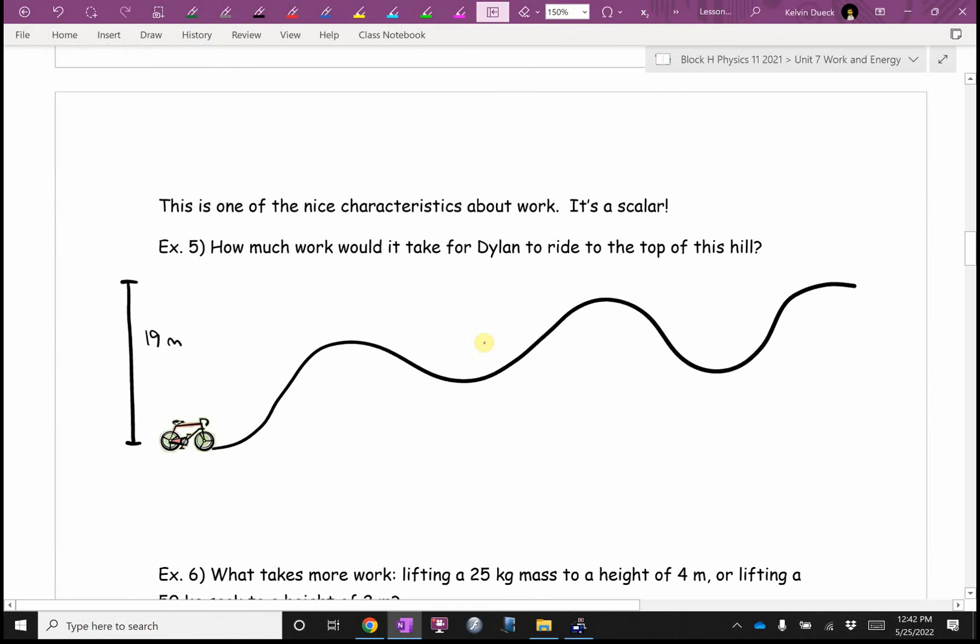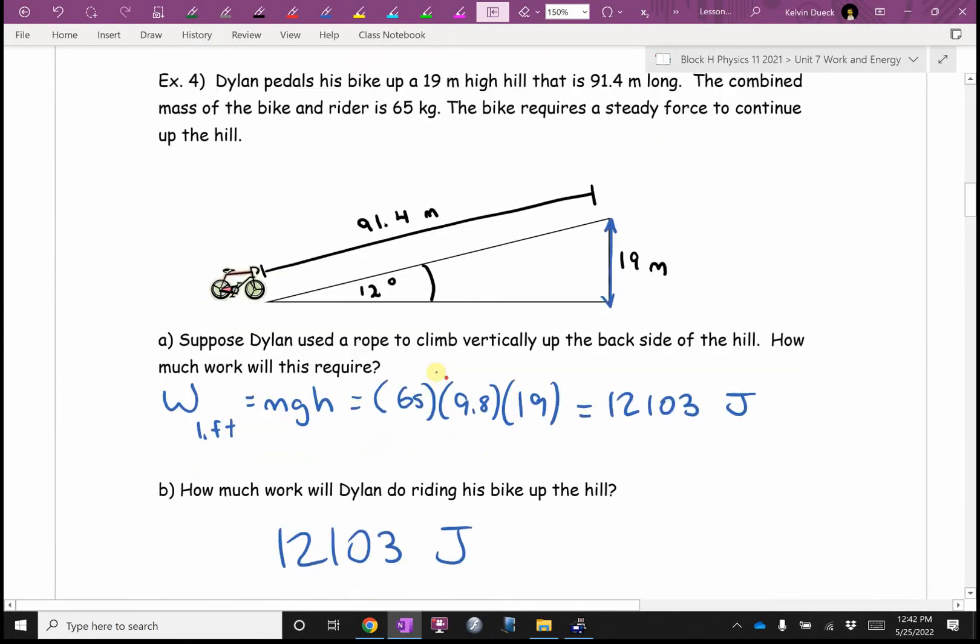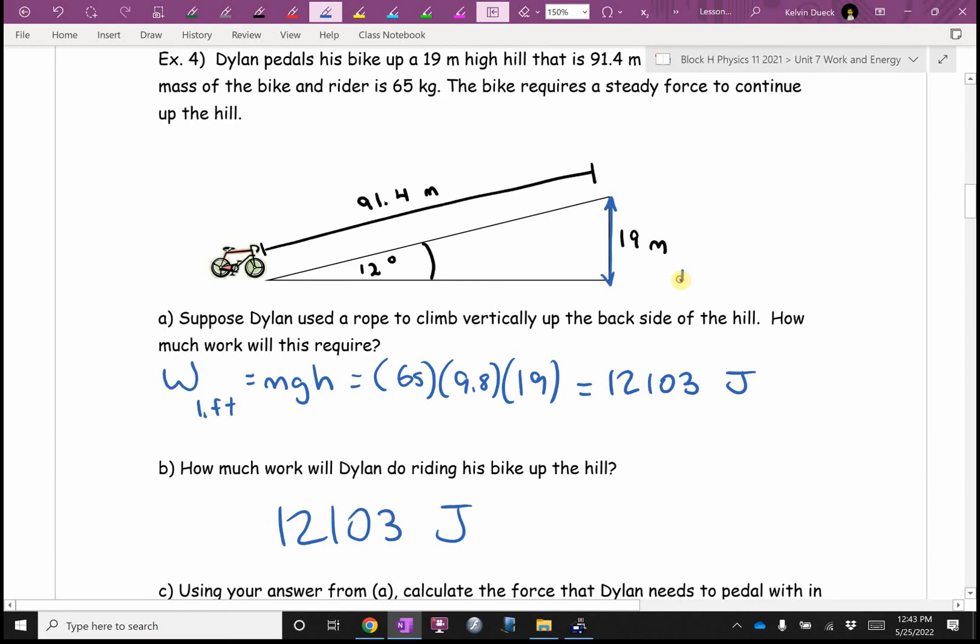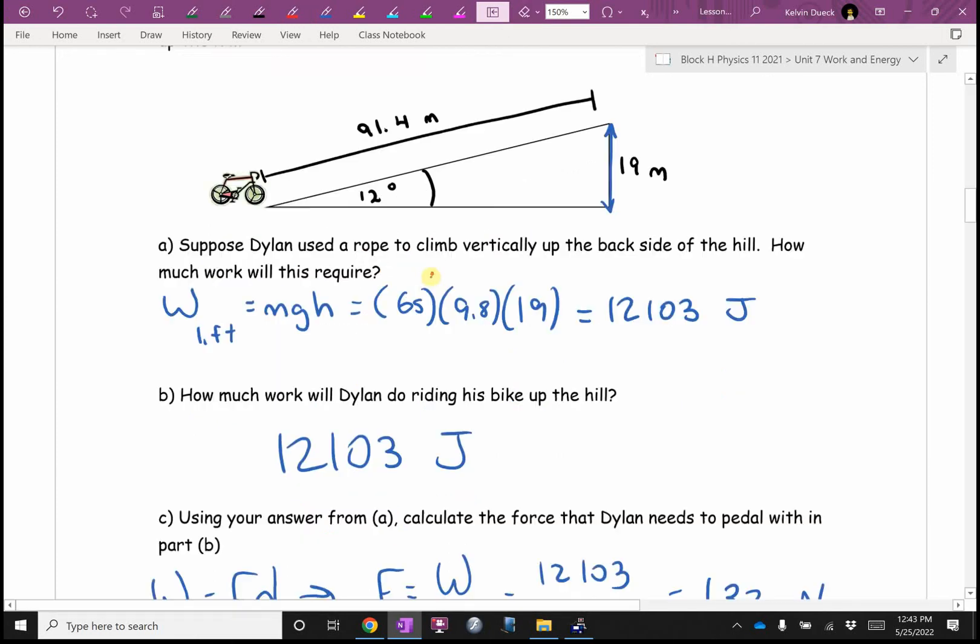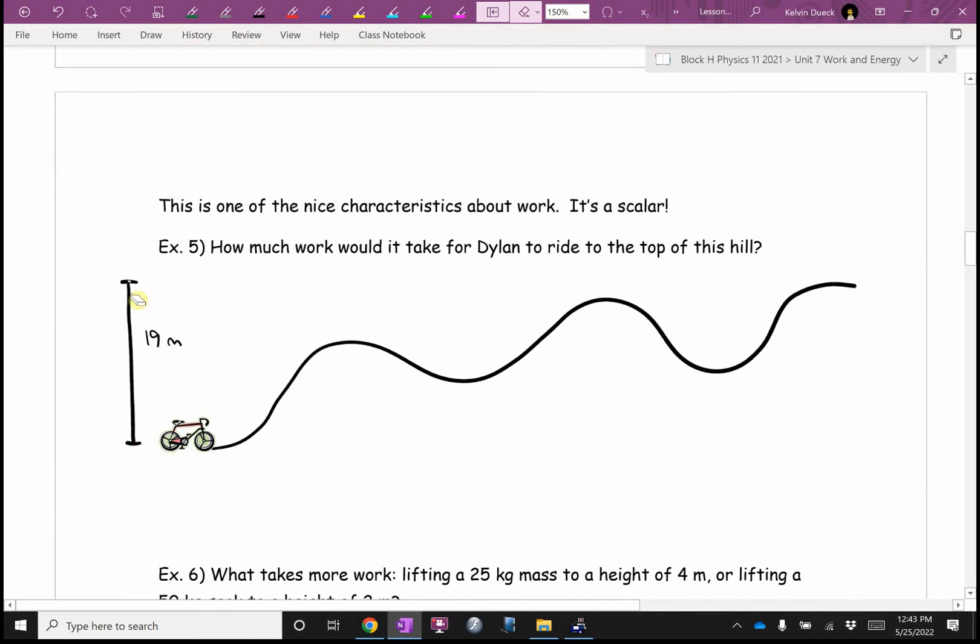This is one of the nice characteristics about work: it's a scalar. What that means is it does not care about the intervening path that you took. Work doesn't care whether Dylan went like this or whether Dylan went like this or even whether Dylan went like this. All it cares about is where did you start on the ground, where did you end up 19 meters high, what force were you doing work against? Gravity. Well then it's MGH no matter what. I don't care how you got there. Sarah Ashley, is it still 19 meters of height in this picture here? Then you know what it's still 12,103 joules of work. This is why work and energy are useful for analyzing roller coasters.